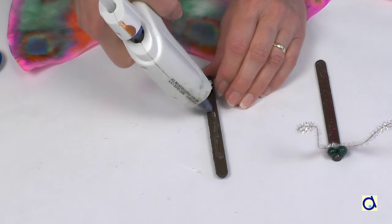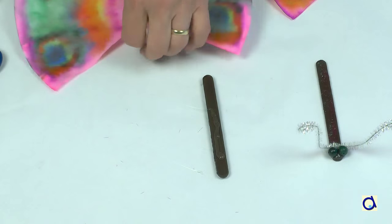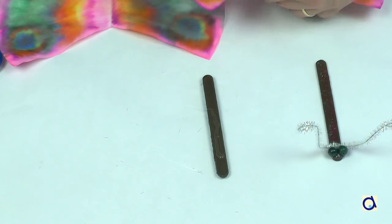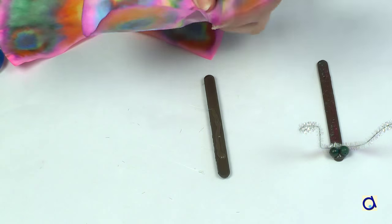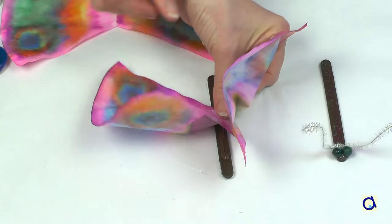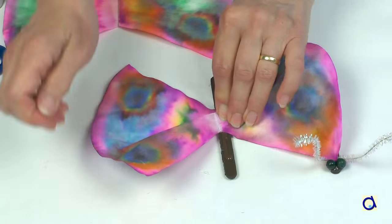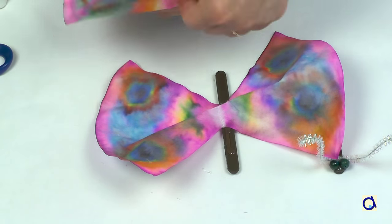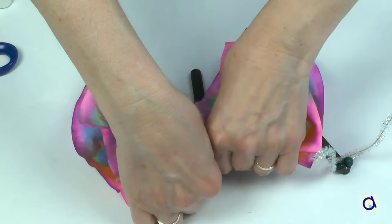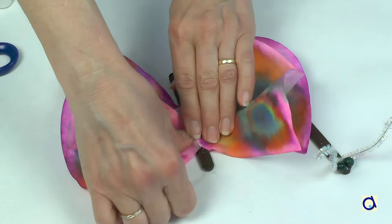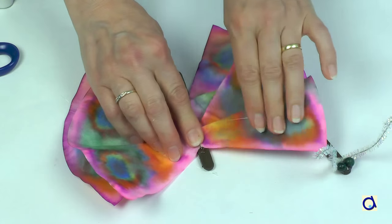Because popsicle sticks are longer than clothespins, you can give your butterfly four wings. That means that you will need two coffee filters. You can again use the technique with felt tip pens and water or you can paint the wings. When dry, glue the filters on the side opposite to the magnet.